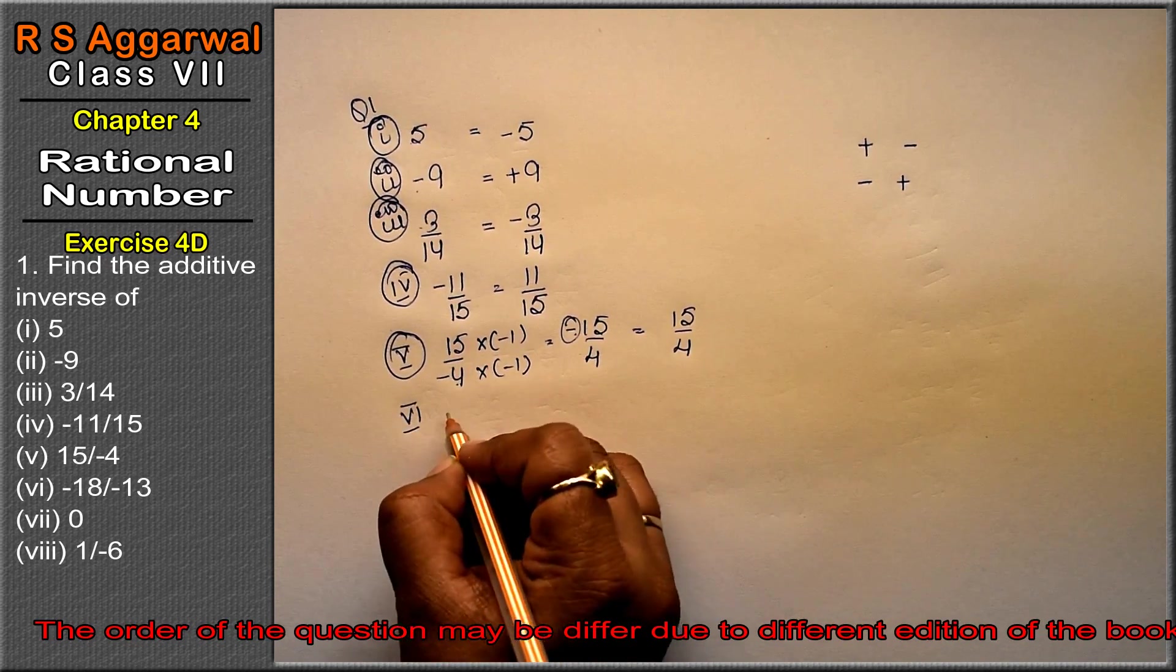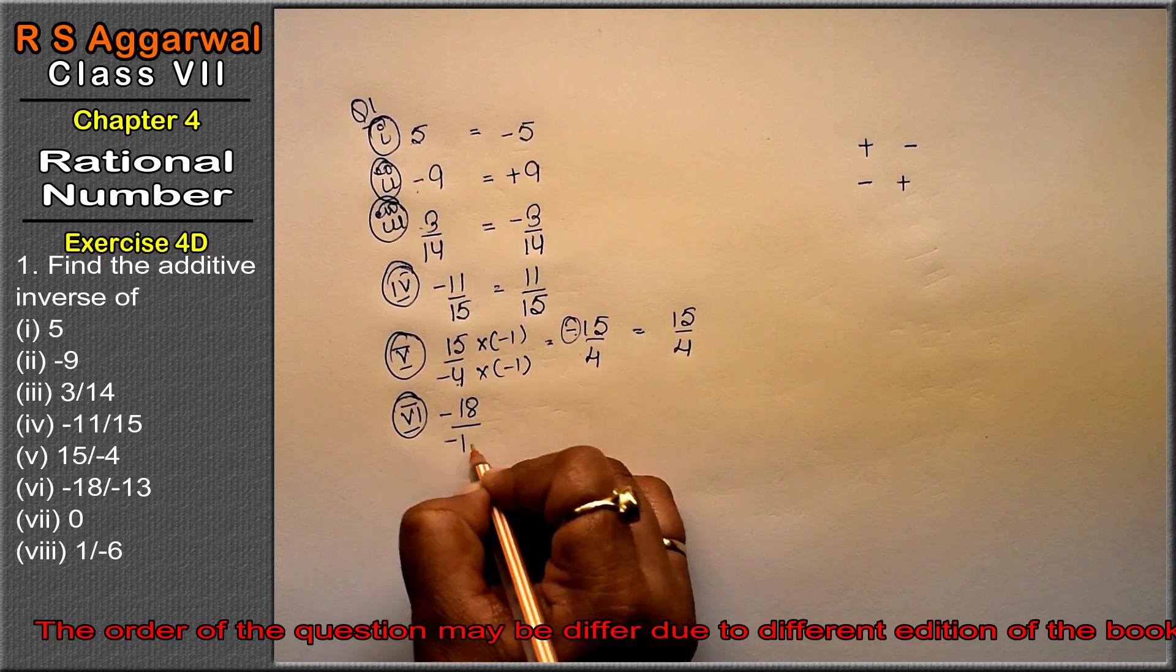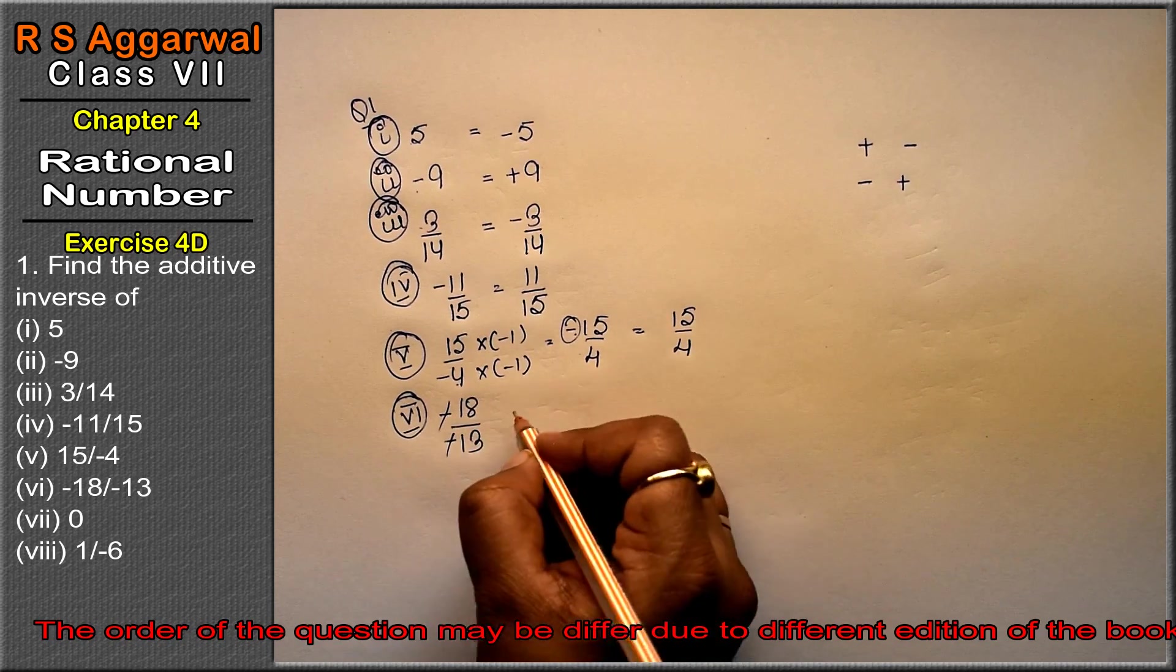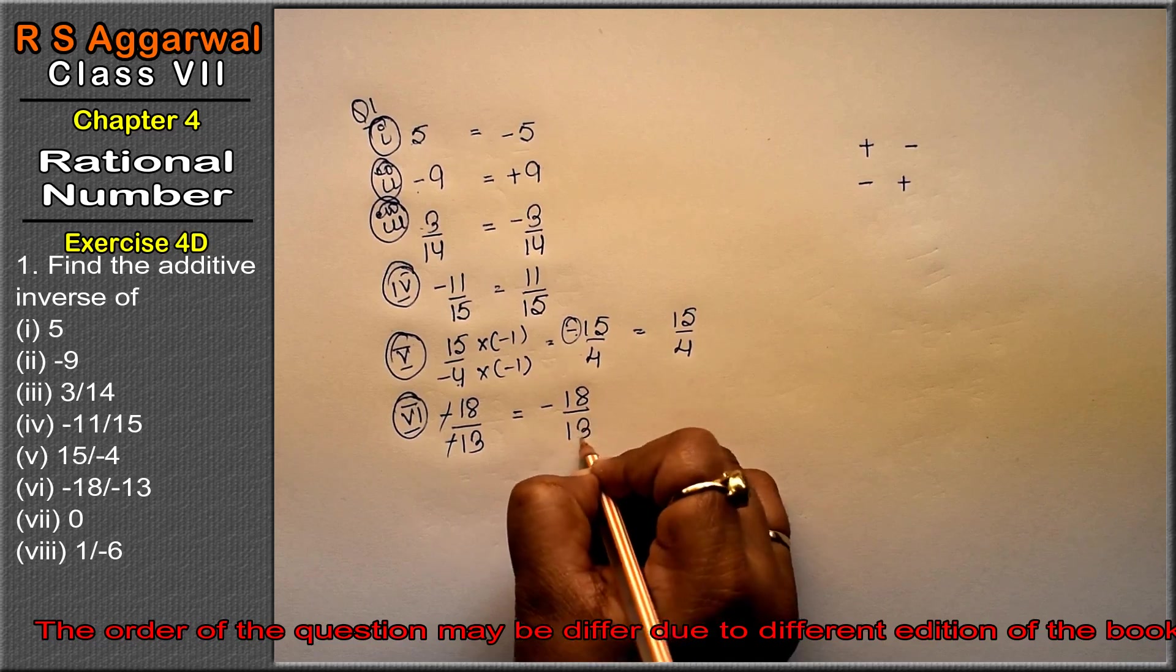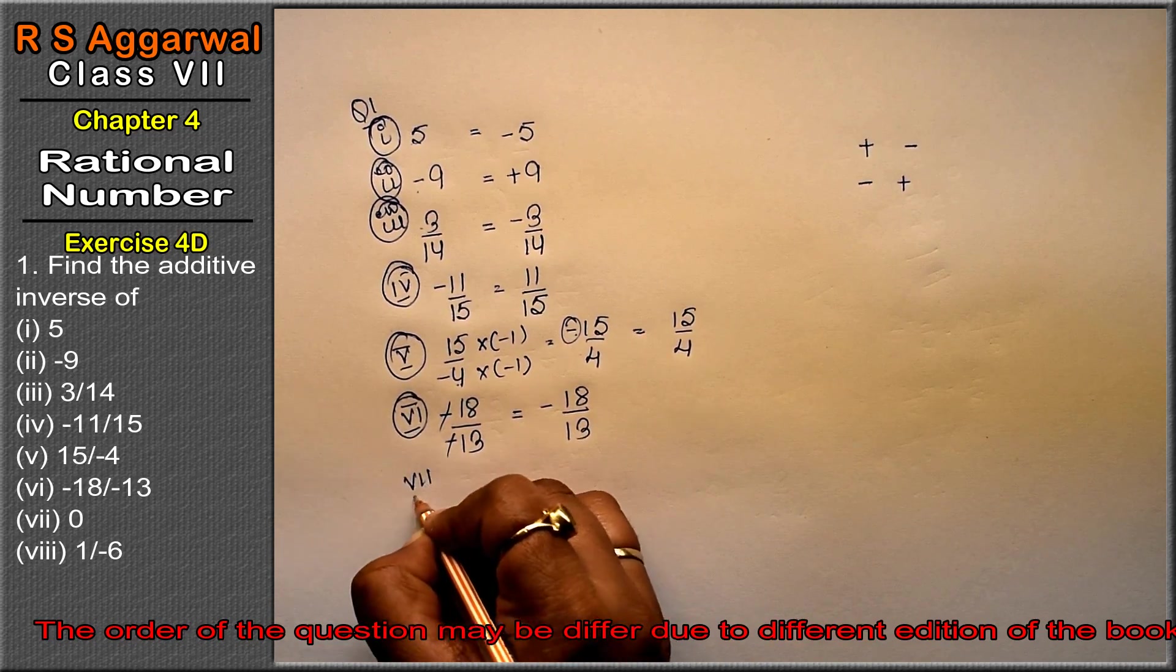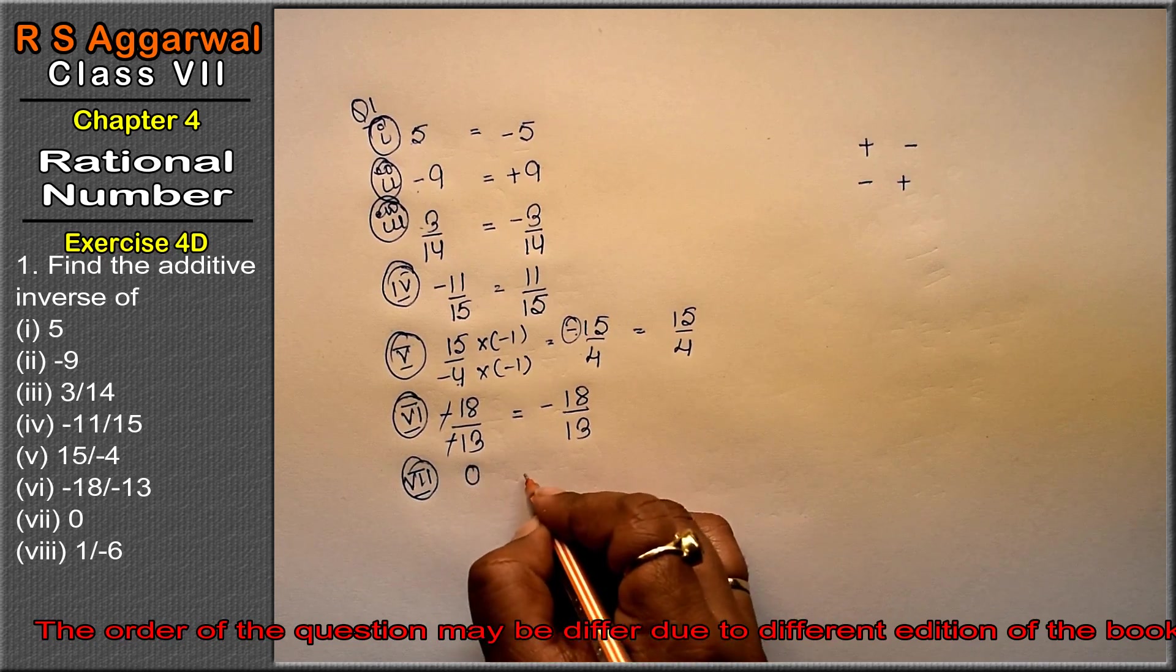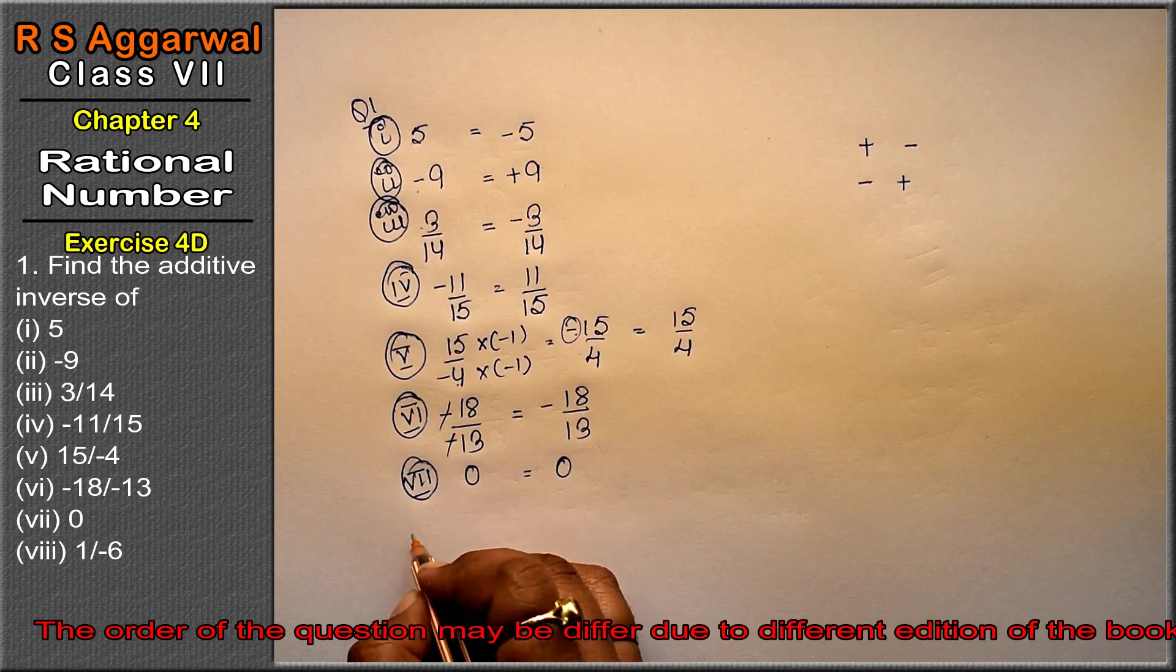Sixth part: minus 18 upon minus 13. Friends, we know minus minus cancels, so this is positive. Its additive inverse will be minus 18 upon 13. Seventh part: 0. Friends, zero has no sign, neither plus nor minus. That means 0 is the answer.